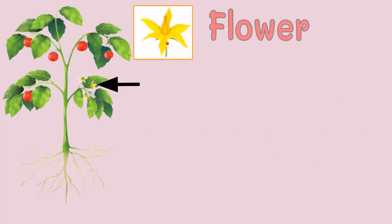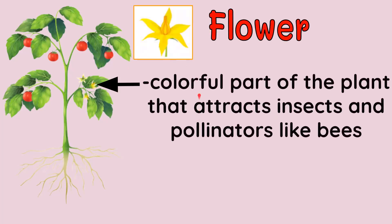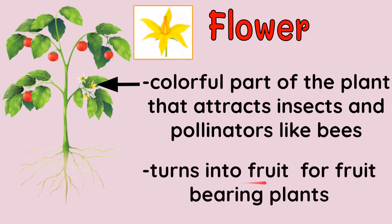Now let's go to the flower. The function of the flower: it's a colorful part of the plant that attracts insects and pollinators, like bees and butterflies. And it turns into fruit for fruit-bearing plants. For this tomato, this flower turns into fruit, which is the tomato itself. The function of the flower: it is a colorful part that attracts pollinators and turns into fruit for fruit-bearing plants.